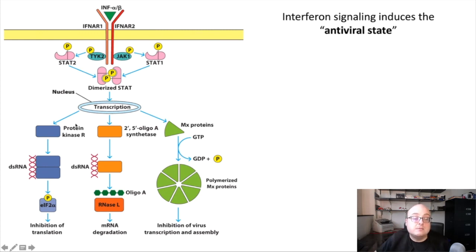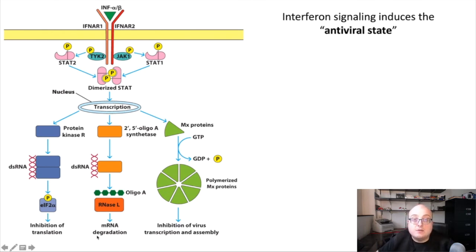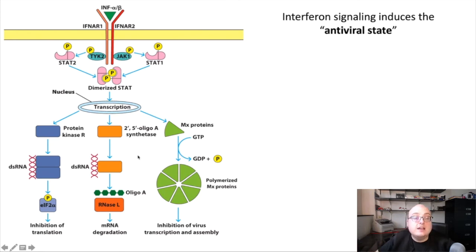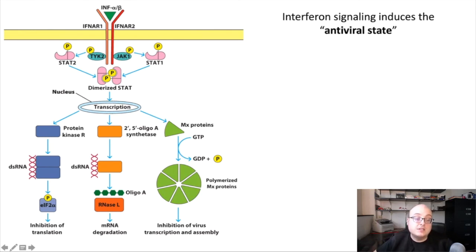This happens through a mechanism mediated by a molecule called protein kinase R, or PKR. The function of PKR is to turn off translation broadly in the cell, which is a major antiviral effector mechanism of interferon. Another mechanism is to induce the degradation of mRNAs. Viruses transcribe their genomes into mRNA in order to be translated, so if we create mRNA degradation mechanisms we can prevent viral replication that way. This happens through an effector molecule called RNase L, which is induced by interferon in cells and degrades mRNAs — both host and viral — preventing viral replication from progressing further.